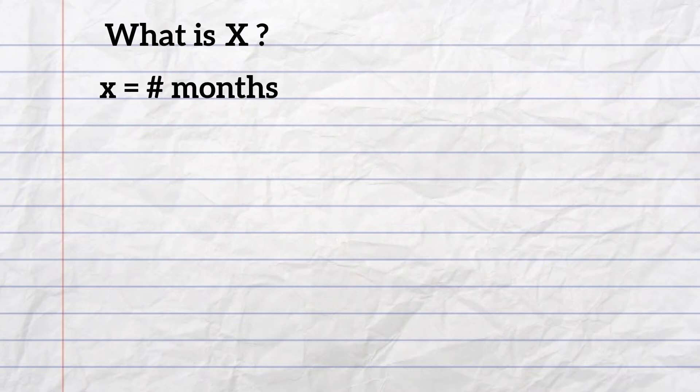Next, you will set up an equation where they are both equal. You will have 18 plus 4 times x, because it is per month.